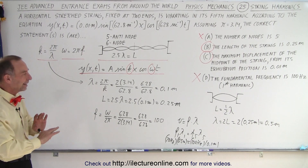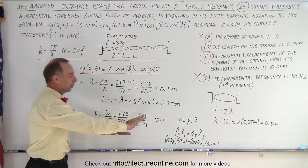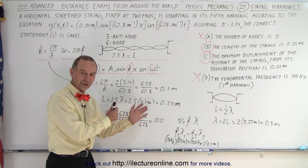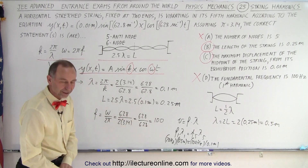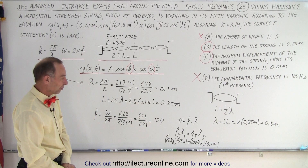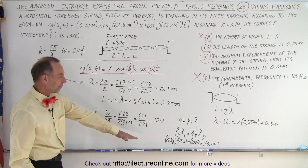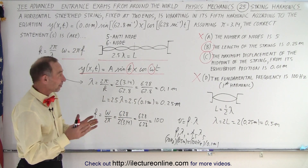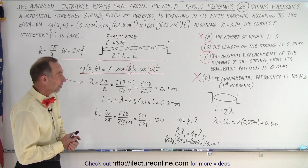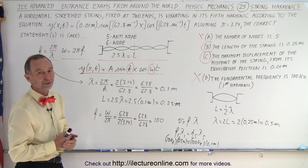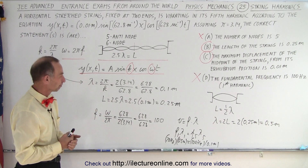You didn't actually have to go through the full calculation for the fundamental frequency. You could realize already that the fifth harmonic was 100 Hz, so therefore the first harmonic could not also be 100 Hz, and immediately rule out answer D.